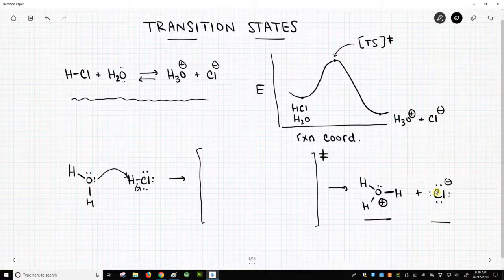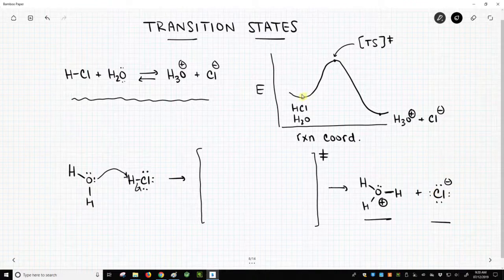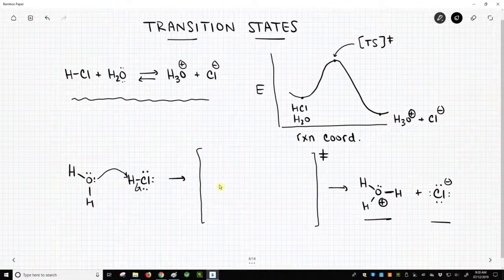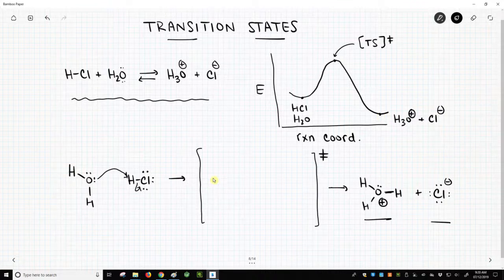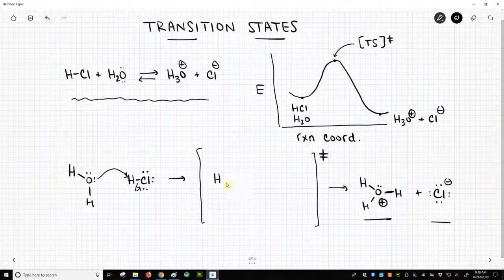So the transition state is some intermediate process. It's the transition between the two states. Which two states? The starting material and the product. It's our transition state. So how do we draw this? We have to actually try to draw partial bonds because we're going between having no bond between oxygen and hydrogen and having a new bond. So we'll have to draw something like a one-half bond.